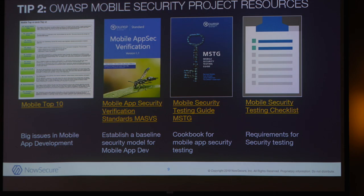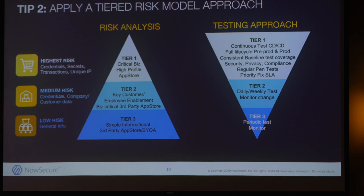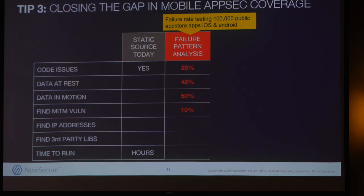OWASP decided a number of years ago that web and mobile are different — maybe we should have a different mobile top ten. We at NowSecure have been proud to work on that over a number of years, and we really encourage every organization to dig into this. There are plenty of resources. If you're a mobile application developer, take a look at the MAS — that's actually how to build a secure mobile application. For the testers, there's the MASTG that goes with it, which teaches you how to do the test practices. One of the keys is really looking at this from a threat model perspective and tiering the applications. An organization with 200 apps can't test everything every day, so tier your strategy just like you would for web.